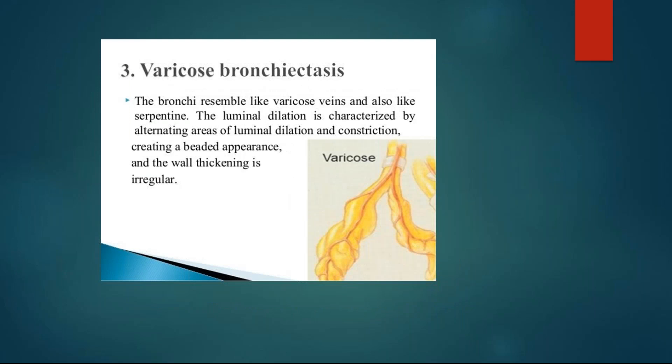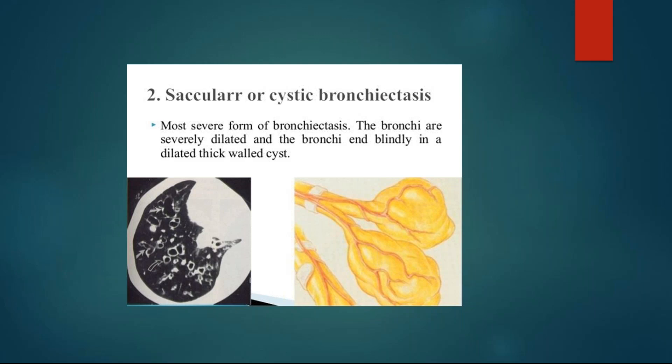Coming to varicose bronchiectasis: similar to varicose veins, which have a serpentine appearance, this type is called varicose bronchiectasis. Here the luminal dilatation shows alternating areas of dilatation and constriction, giving a beaded appearance, and the wall thickening is irregular. These are the three types — fusiform, saccular, and varicose — of which saccular or cystic is the most severe form.